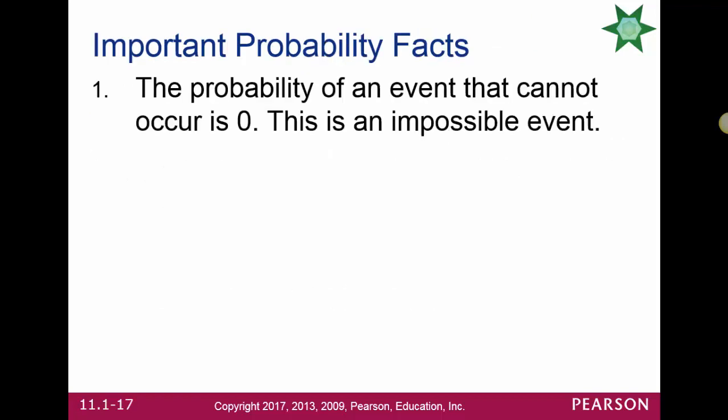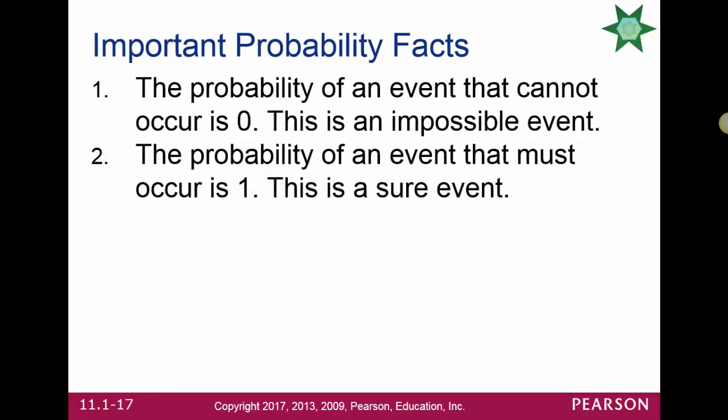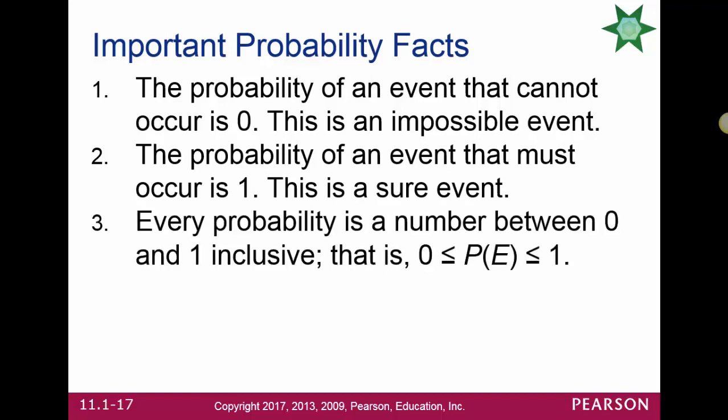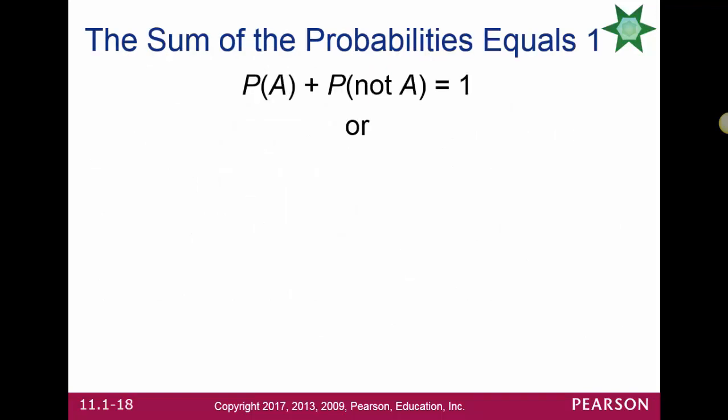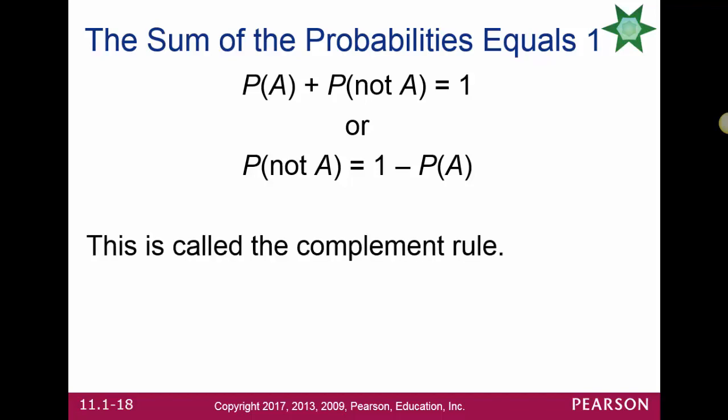The probability of any event that cannot occur is 0 — an impossible event. The probability of an event that must occur is 1 — a sure or certain event. Every probability is a number between 0 and 1 inclusive. The sum of the probabilities of all outcomes in the sample space must add up to 1. Also, the probability of A plus the probability of not A equals 1, which can be rewritten as: probability of not A equals 1 minus probability of A. This is called the complement rule.